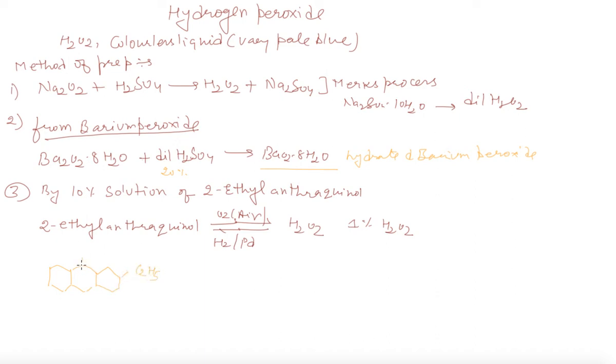2-ethyl anthraquinone with O2 and hydrogen with palladium catalyst. We are getting 1% H2O2. Aqueous H2O2 is recovered by extraction with water, and the byproduct is reduced back by action of hydrogen with palladium and used again.